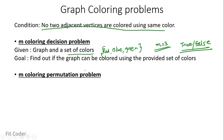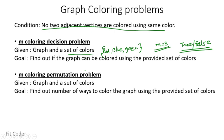The next category is the M coloring permutation problem. Here we are given a graph and a set of colors, and we have to find out the number of ways to color the graph using the provided set of colors. If M equals 3, we have to check how many different combinations are possible.